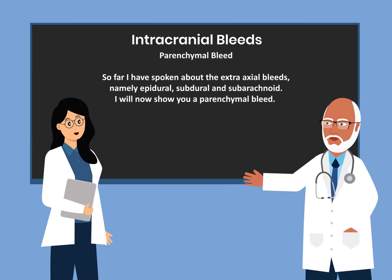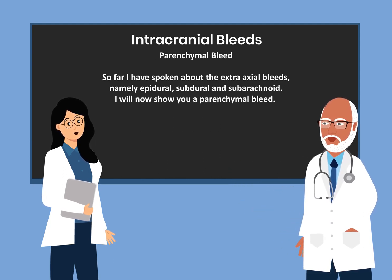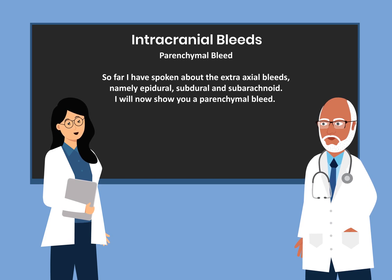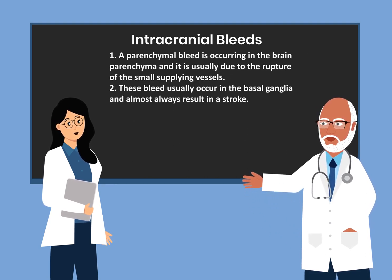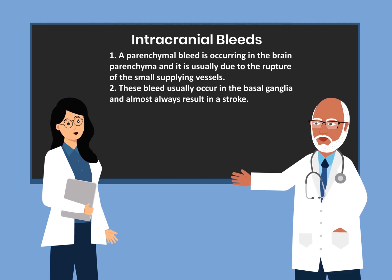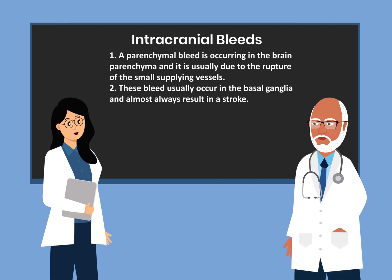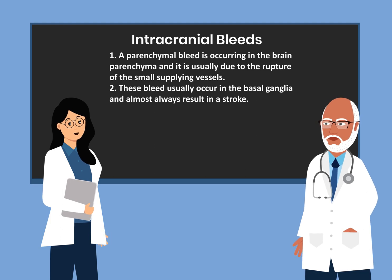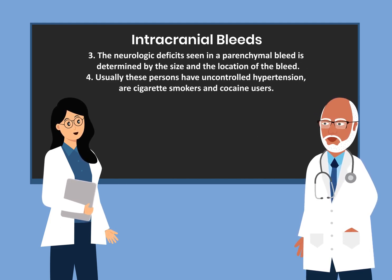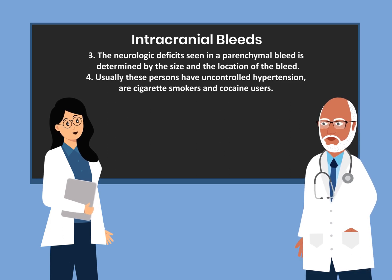The next bleed is the parenchymal bleed. So far I have spoken about the extra-axial bleeds, namely epidural, subdural, and subarachnoid. A parenchymal bleed occurs in the brain parenchyma and is usually due to the rupture of a small supplying vessel. These bleeds usually occur in the basal ganglia and almost always result in a stroke. The neurologic deficits seen in a parenchymal bleed are determined by the size and location of the bleed.